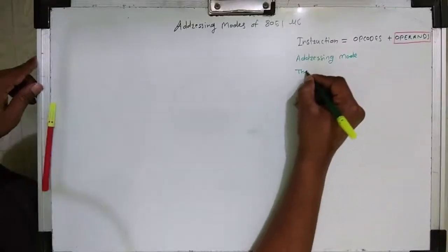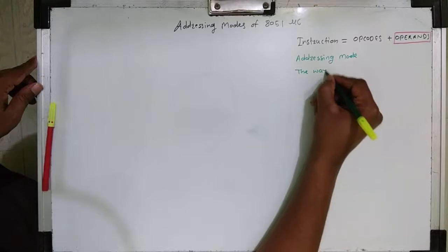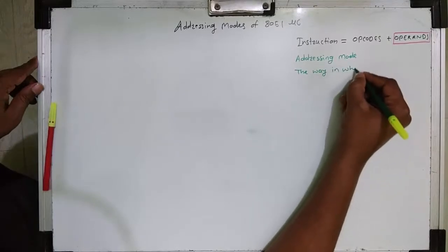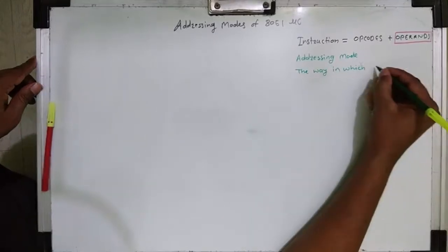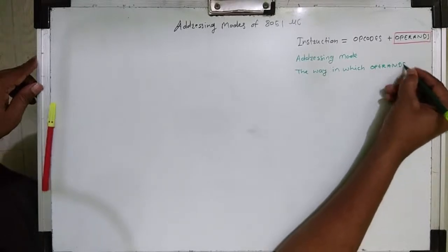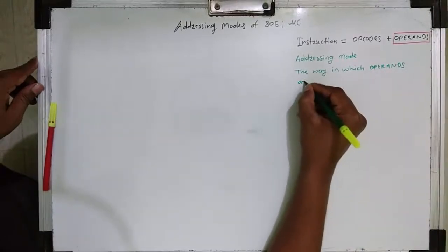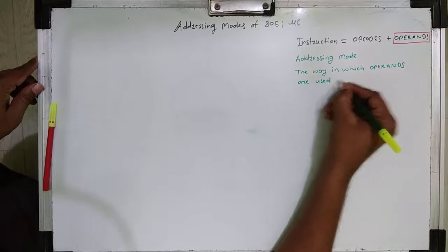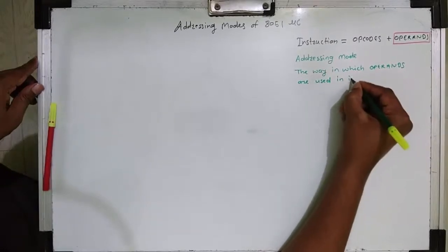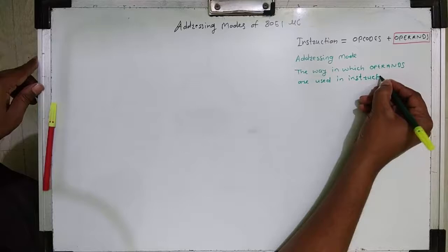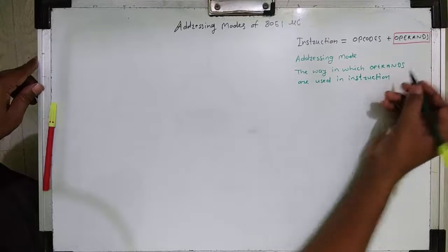Now, the definition of addressing mode: addressing mode is the way in which operands are used in the instruction. Operands are like registers, memory locations, and operations like add, subtract, multiply, divide. The addressing mode defines the way in which those operands are used in the instruction.